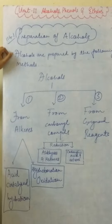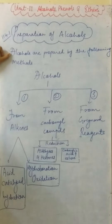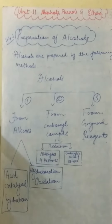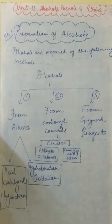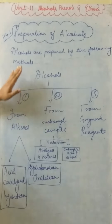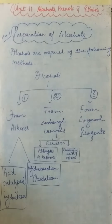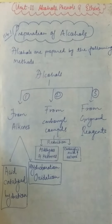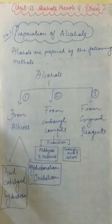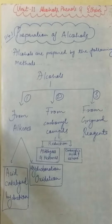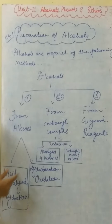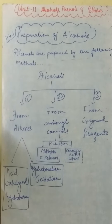You have to copy this in your notebook because it will be easier for you to understand. Alcohols are prepared mainly in three ways: one, from alkenes; two, from carbonyl compounds; and three, from Grignard reagent. From alkenes, there are two sub-methods: acid-catalyzed hydration and hydroboration-oxidation.